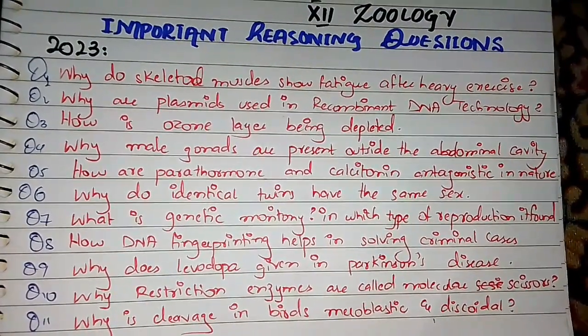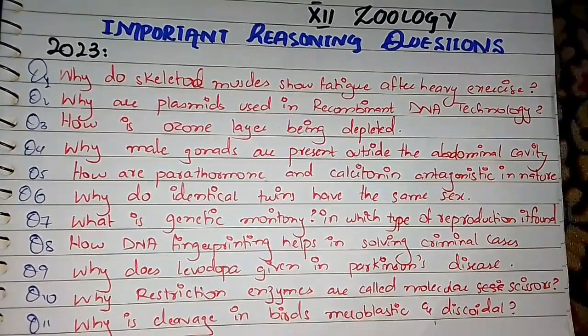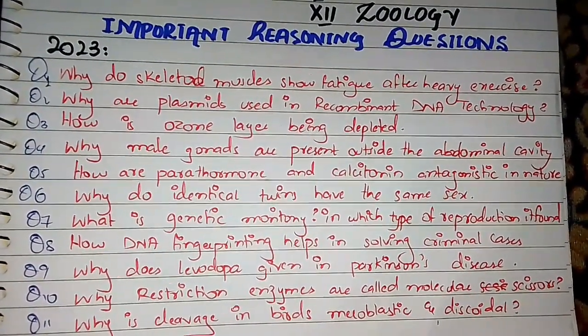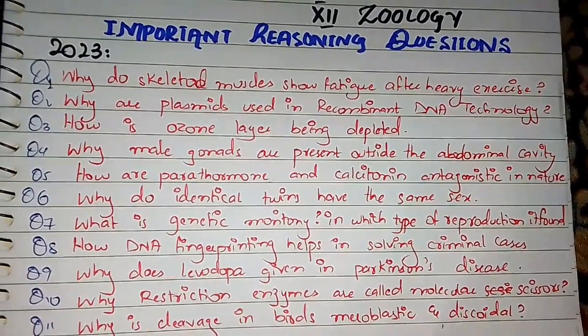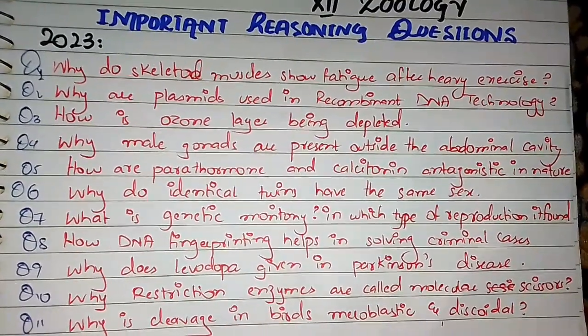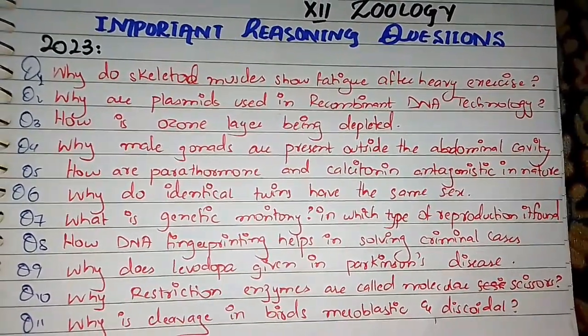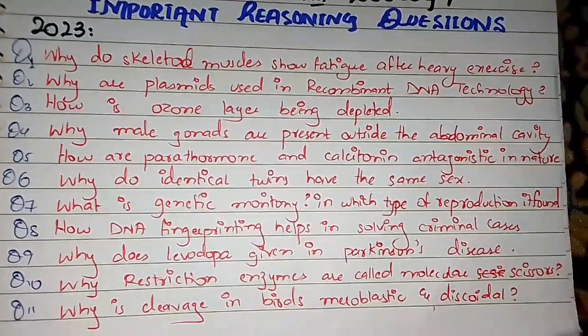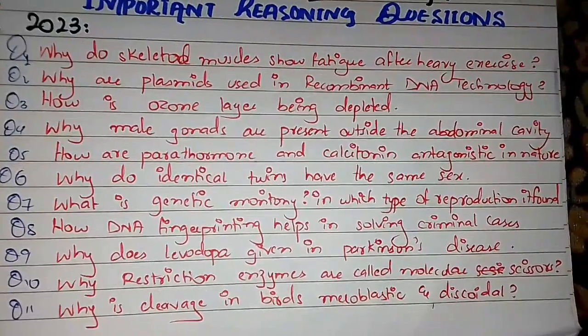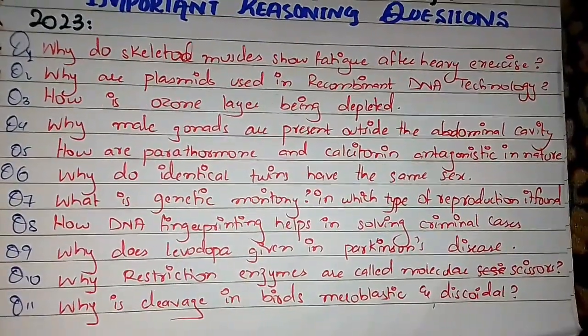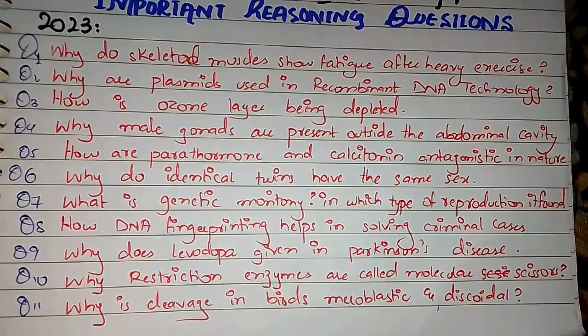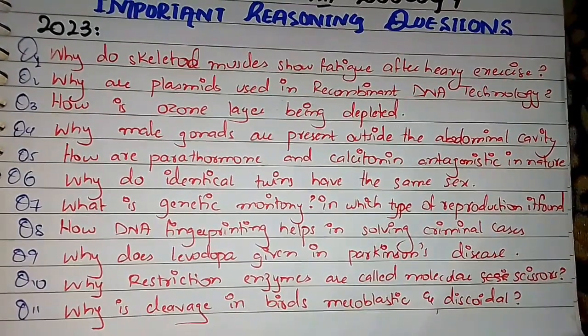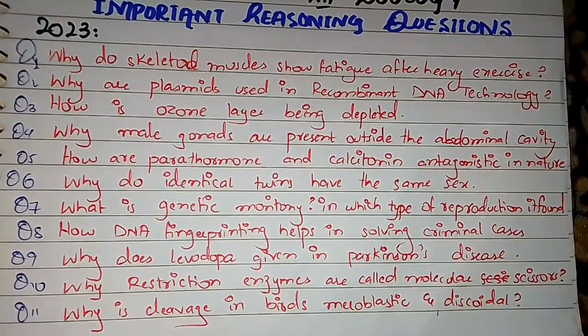Question number 11: That's why we call this meroblastic cleavage and discoidal type. If we talk about other substances like yolk and albumin, they don't divide.